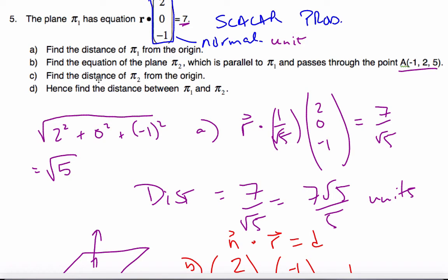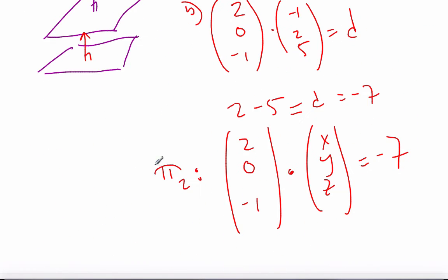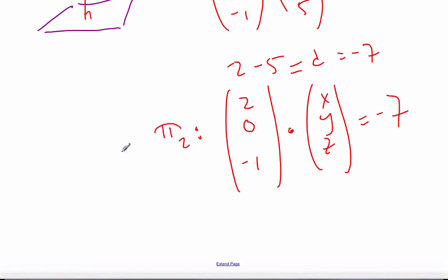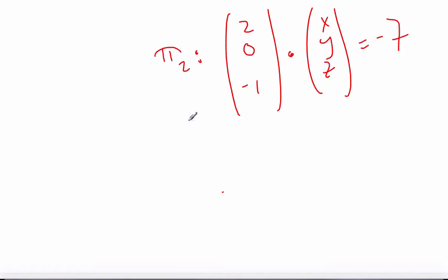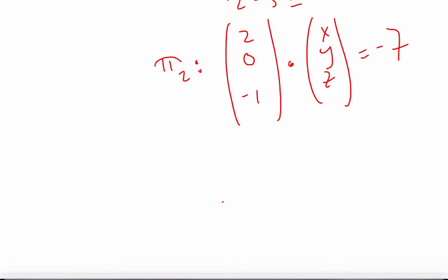The next question says, find the distance of plane 2 from the origin. Well, same premise. We're looking for the distance now. We know the distance. Again, the magnitude of this value is, I know, root 5. The distance of my normal is root 5.